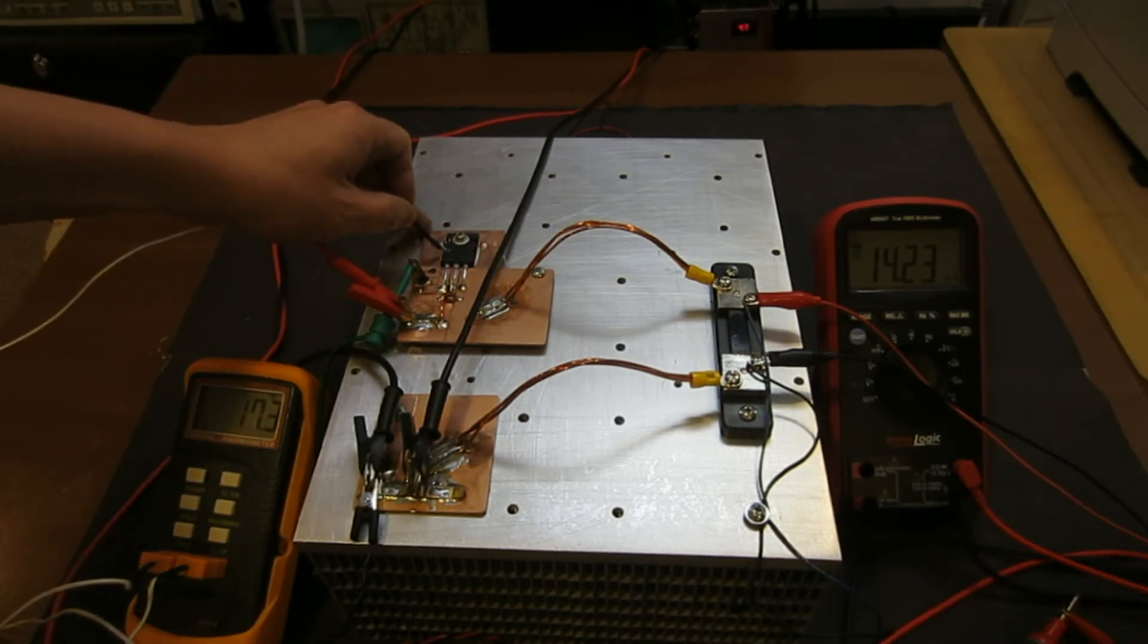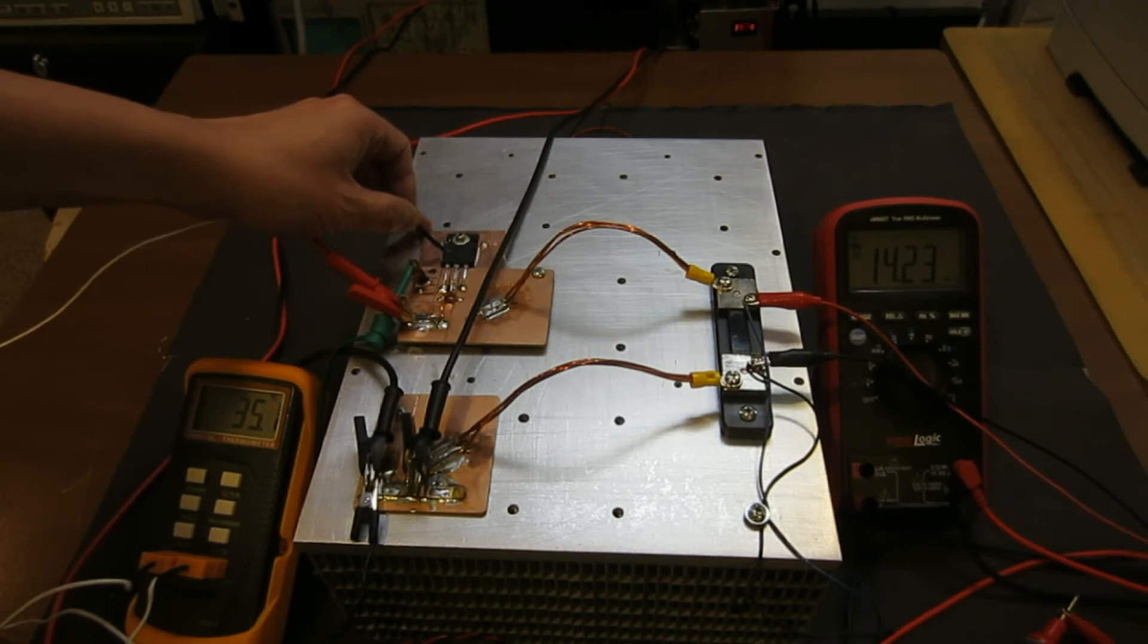Okay. So 19, 28, 35, and that's about it. So if you recall last time when we were dissipating this much power, the temperature rose almost to 90 degrees. So this time certainly is a lot more efficient.